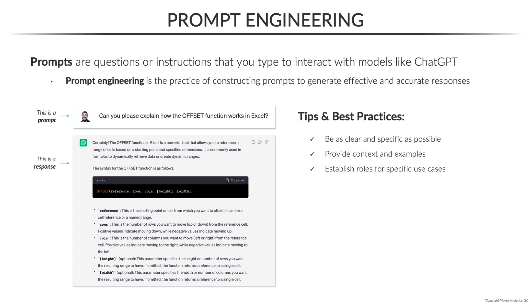Number three, try establishing roles for specific use cases. For example, you might ask ChatGPT to play the role of a career coach or a marketing specialist. Number four, set the tone or level of complexity — this is one of my favorites. You can ask it to explain concepts in a way that a child might understand, for example.